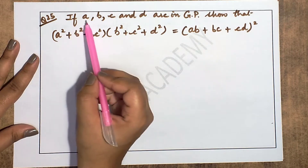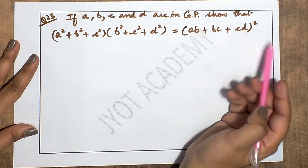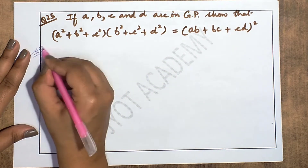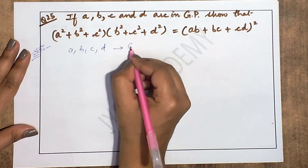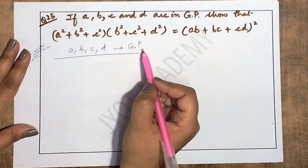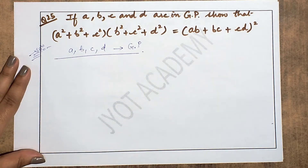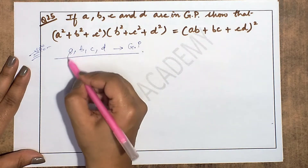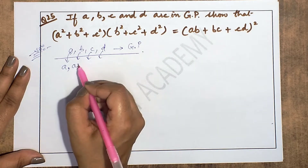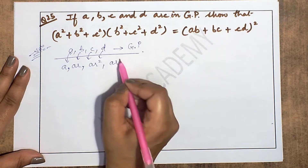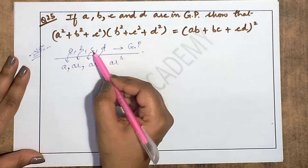Question 25: If a, b, c, d are in geometric progression, show that (a²+b²+c²)(b²+c²+d²) = (ab+bc+cd)². Since a, b, c, d are in GP, let the four terms be a, ar, ar², ar³. So: a = a, b = ar, c = ar², d = ar³.